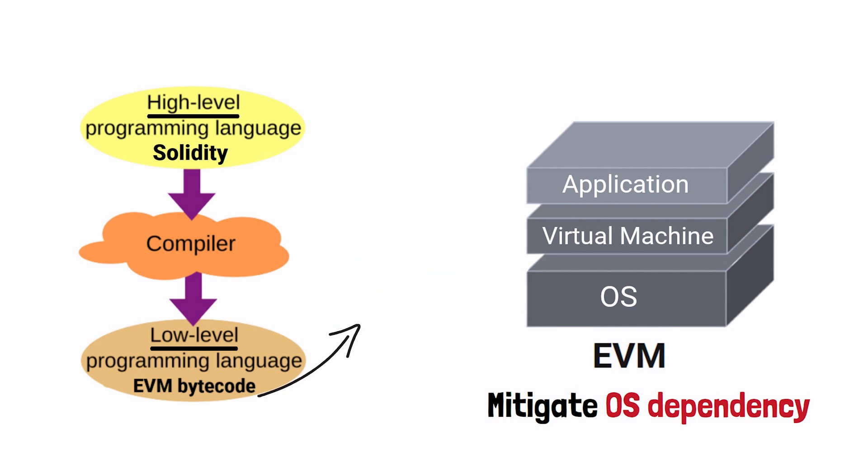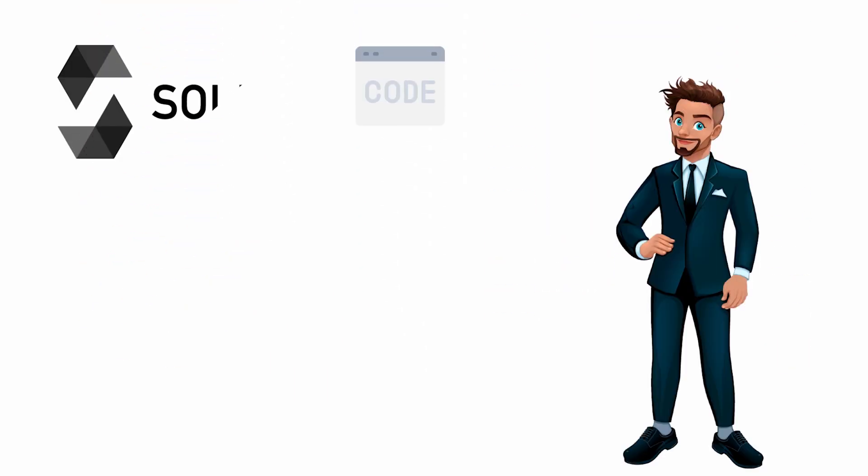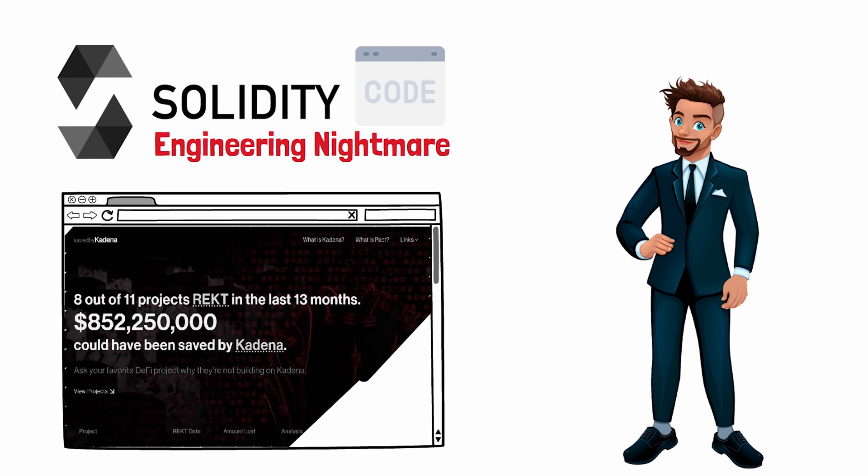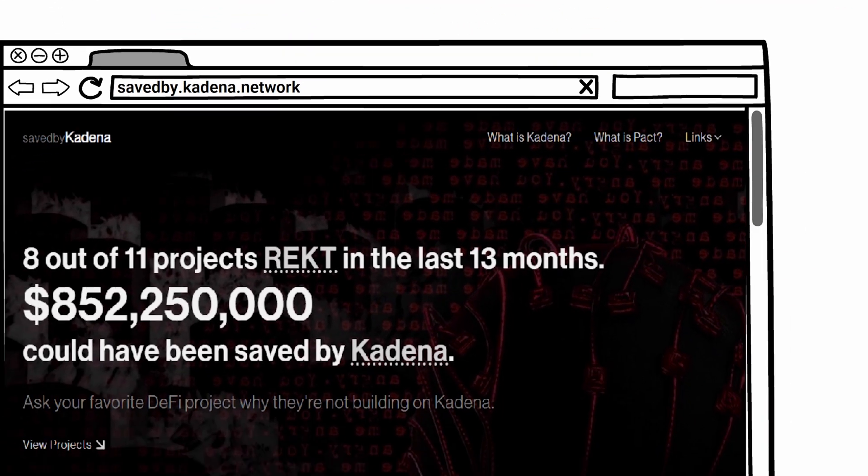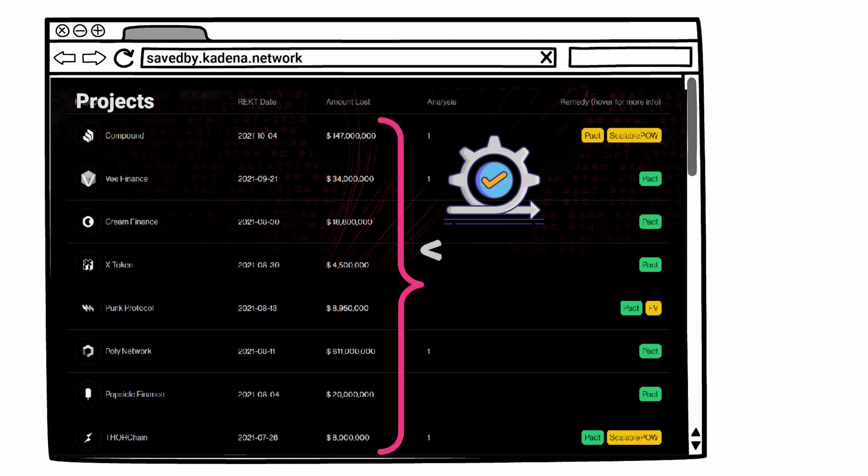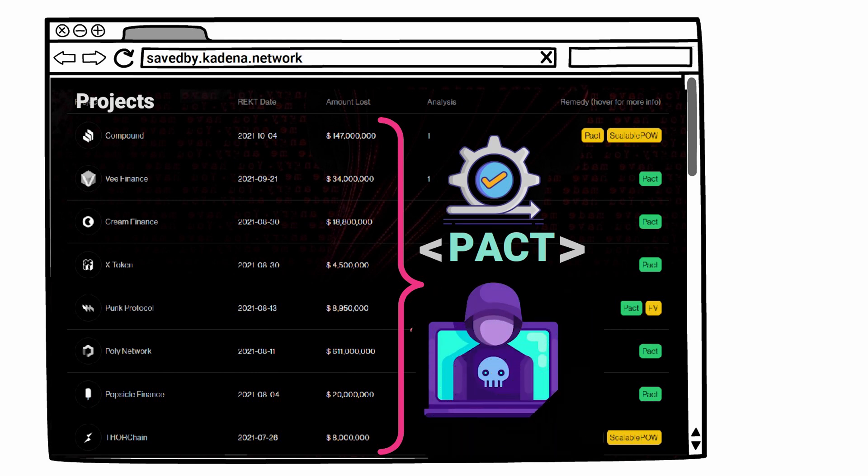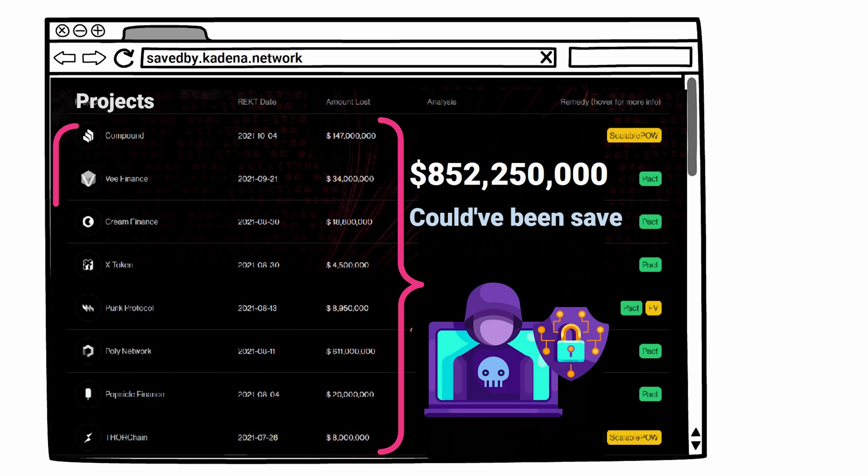Alright squad, now that you have a general understanding of why programming in Solidity is an engineering nightmare, I want to show you a website that you're never going to hear the mainstream crypto media talking about. It's called SaveBy.Kadena.Network. This website shows us a list of crypto projects that got hacked in early 2021. If eight out of these eleven projects would have built their project using the coding language Pact, the developers would have never been able to program in bad code that gave the hackers the ability to exploit the protocol. Over $852,250,000 could have been saved if these applications just would have built their project in the coding language called Pact.